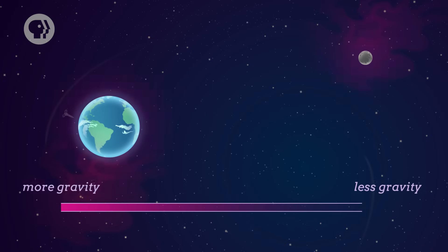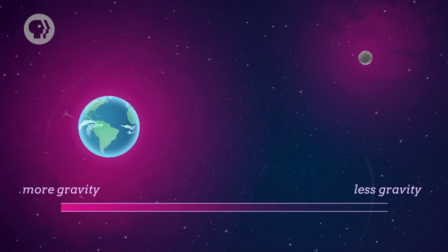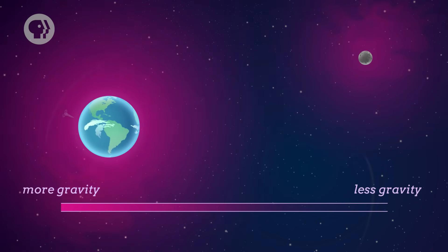The Moon also happens to be about 60 times as far from the center of the Earth as that apple would be. And 60 squared is 3,600. So Newton figured that the gravitational force between two objects must get smaller the further apart they are. More specifically, it must depend on the distance between the two objects squared. Then there was mass — not the mass of the apple or the Moon, but the mass of the other object involved in the gravitational dance. In this case, Earth. Newton realized that the greater the masses of the two objects pulling on each other, the stronger the gravitational force would be between them.